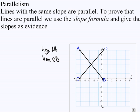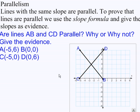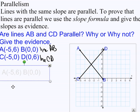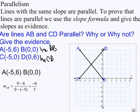Parallelism is a little different. Lines with the same slope are parallel. To prove that lines are parallel, we use the slope formula and give the slopes as evidence. So don't confuse congruency with parallelism. The question says: are lines AB and CD parallel? So here are the coordinates of line AB and here are the coordinates of line CD. To answer this question, we have to give the slopes as evidence. The slope of AB is −6/5.